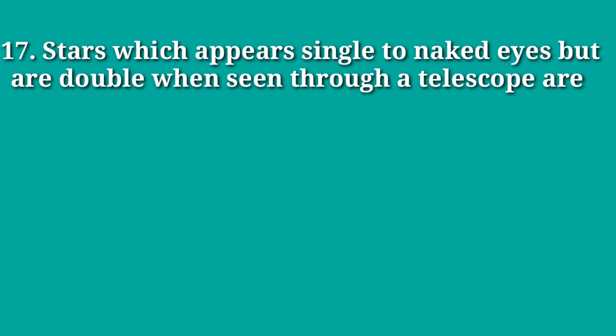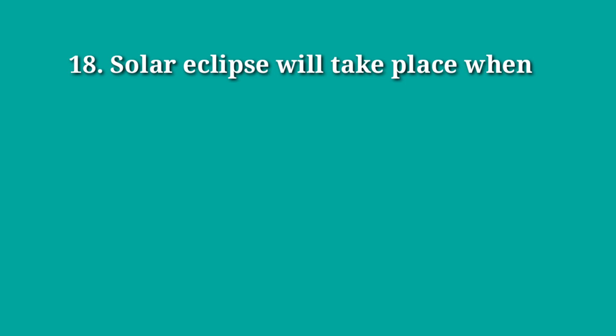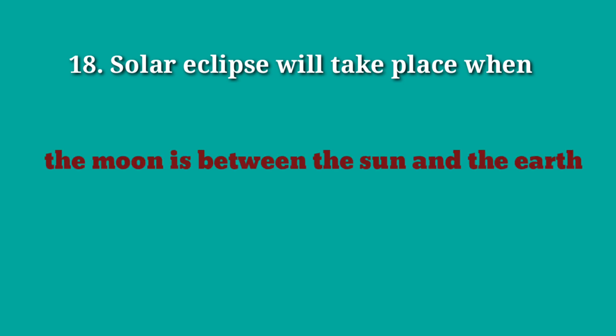Stars which appear single to the naked eye but are double when seen through a telescope are called binaries. A solar eclipse takes place when the moon is between the sun and the earth.